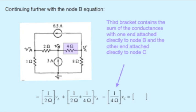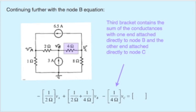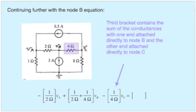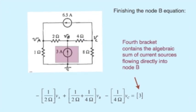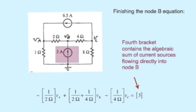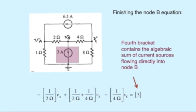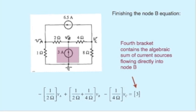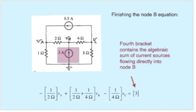For the bracket in front of V sub C, the quantities in there depend on what resistors have one end on node B directly and one end on node C directly. Again, there's only one. In this case, it's a 4 ohm resistor. So we have 1 over 4 ohms, or 0.25 Siemens, again with a minus sign. To finish the node B equation, we need to know what current sources have a terminal directly connected to node B. There's a 3 amp source that satisfies that criteria. Notice that its arrow points into the node, so we will have a positive sign. So to conclude the equation, on the right-hand side of the equal sign, we enter 3 amps.